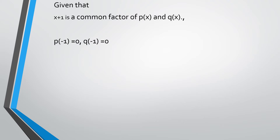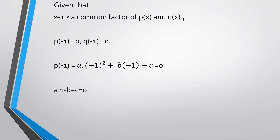That factor value has to be substituted in p of x in the place of x, that is p of minus 1 is equal to 0 and q of minus 1 is equal to 0. Substituting p of minus 1: a into minus 1 whole square plus b of minus 1 plus c is equal to 0. This gives us equation 1: a minus b plus c is equal to 0.